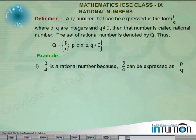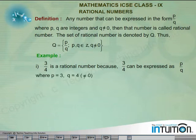Example 1: 3 by 4 is a rational number because 3 by 4 can be expressed as P by Q where P is equal to 3, Q is equal to 4, is not equal to 0.